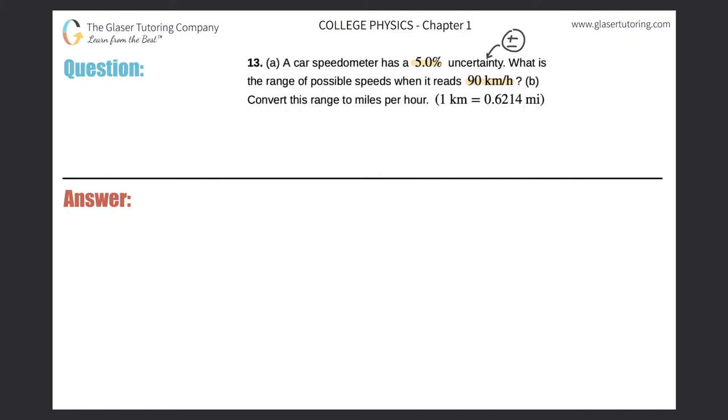So if I were to write out a simple equation that represented the measured speed and the uncertainty, it would look something like this. So we would write down 90 kilometers per hour plus or minus 5.0%.